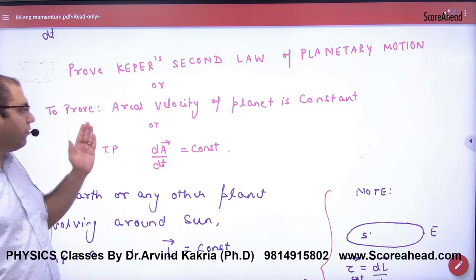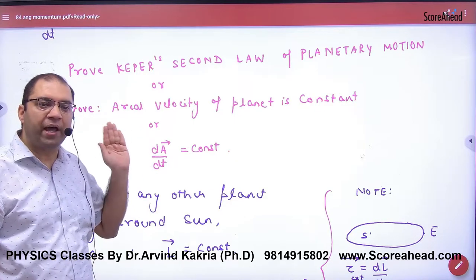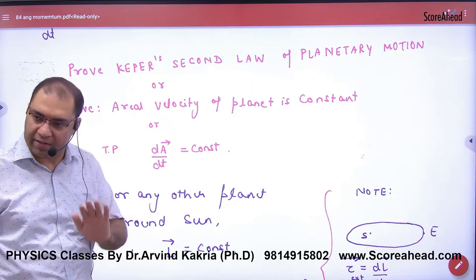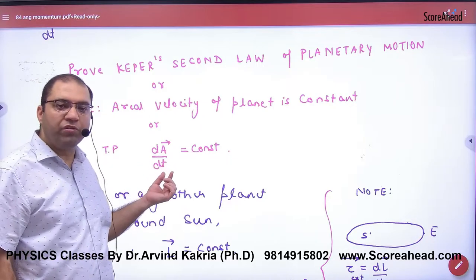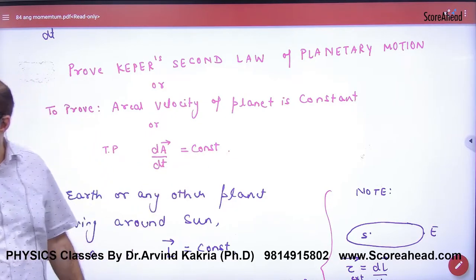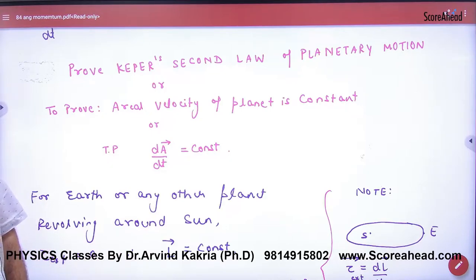To prove aerial velocity of a planet is constant will come in this way. Third question will come: prove that dA by dt is constant. This is also coming. One thing, three questions, four, write one more.